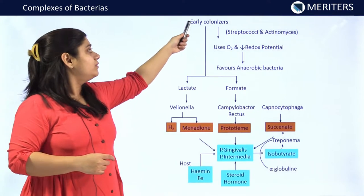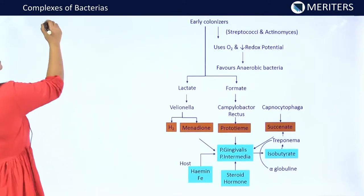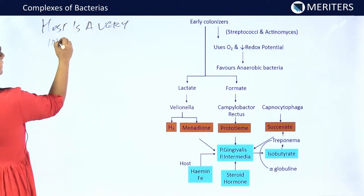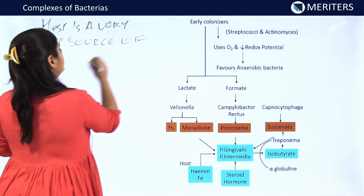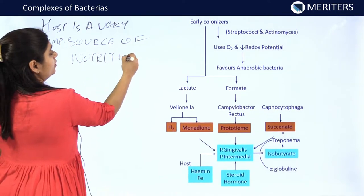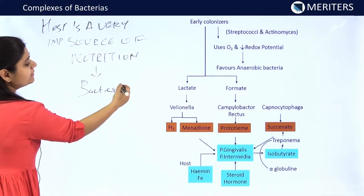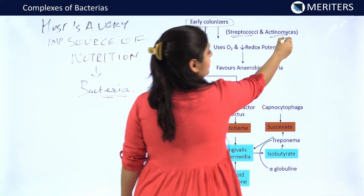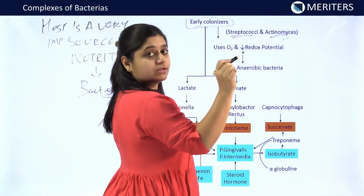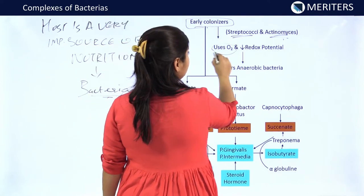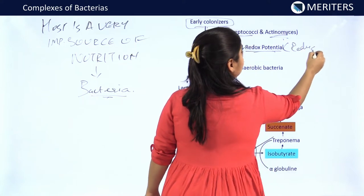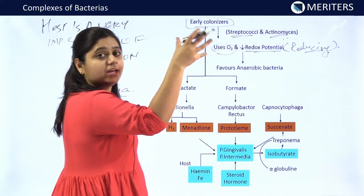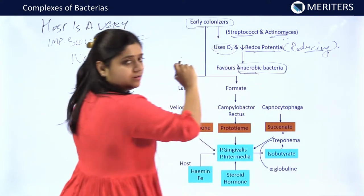Now let us see how these bacteria derive nutrition from the host. The host is a very important source of nutrition to bacteria. When primary colonizers like streptococci and actinomyces invade the oral cavity, they utilize the oxygen present and decrease the redox potential, making the environment more reducing and acidic. These organisms thus create an anaerobic environment over which the secondary colonizers can survive.